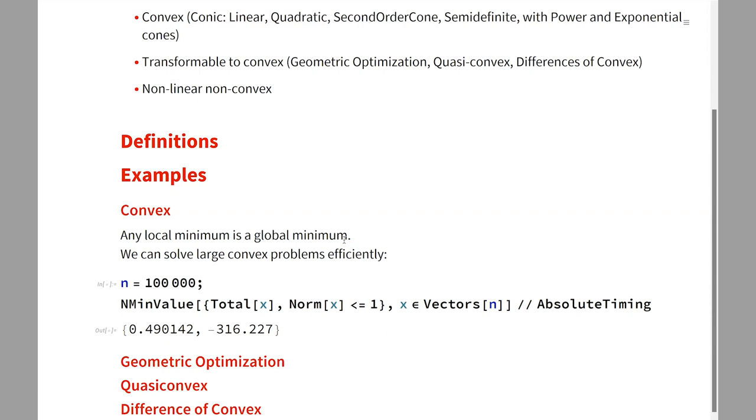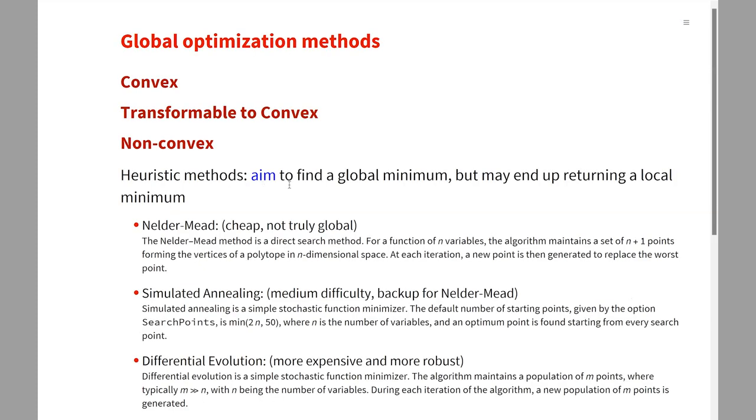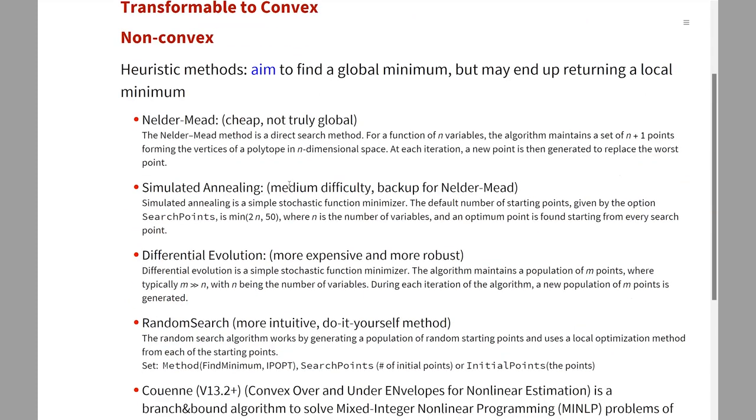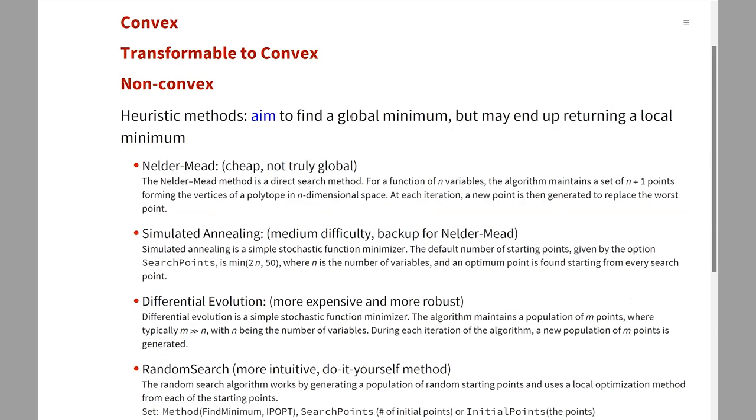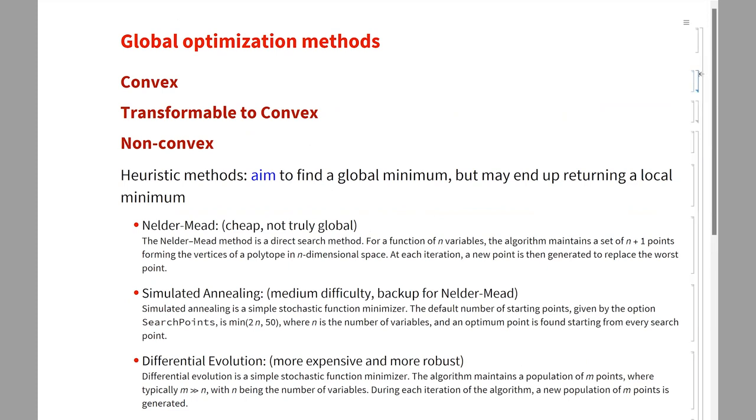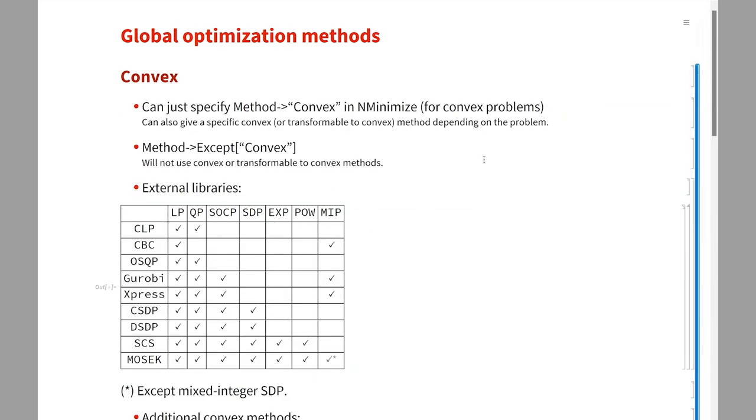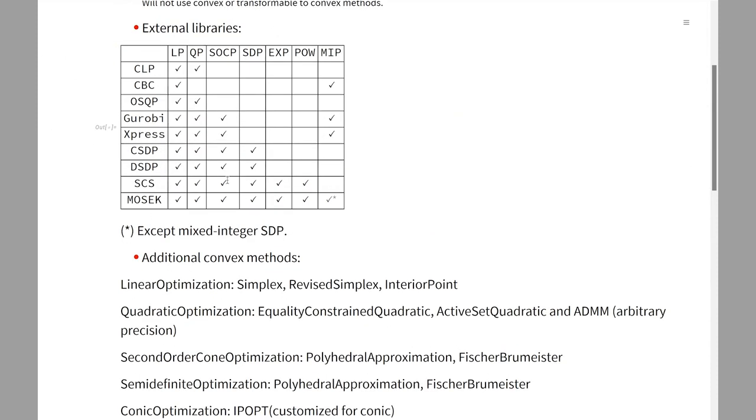I'll talk about the non-convex methods. Let's start with just a quick table for the convex solvers that we have. You can say Method goes to Convex, or if you want to be certain that you're using a non-convex solver you can say Method goes to Accept Convex. We have all these library solvers here that I have talked about before.